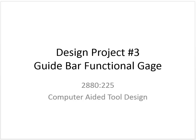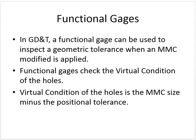This project is about a functional gauge. In GD&T, a functional gauge can be used to inspect the geometric tolerance when an MMC modifier is applied. The functional gauges check the virtual condition of the holes, and essentially the virtual condition of the holes is the MMC size minus the positional tolerance.